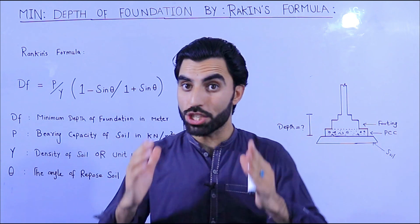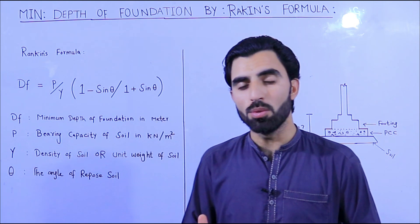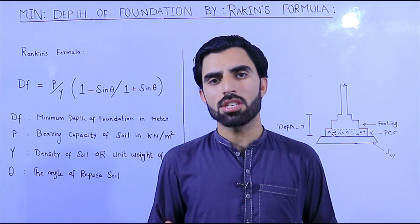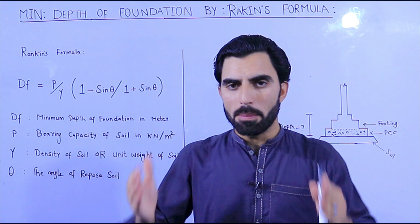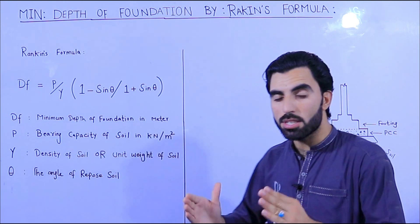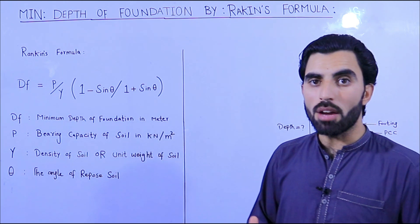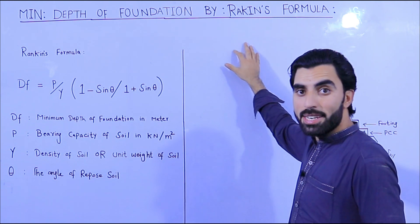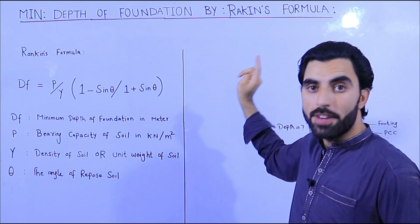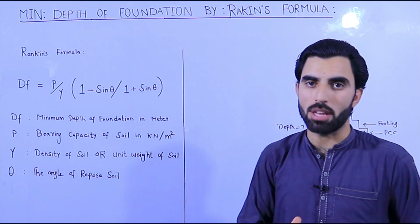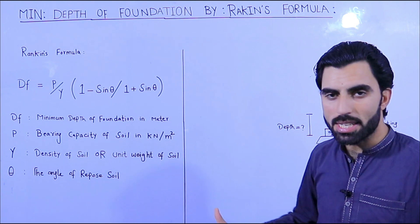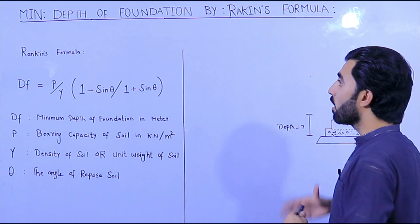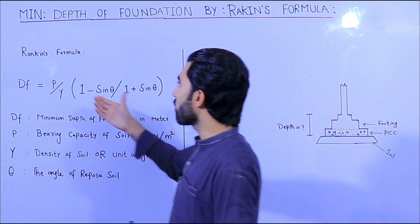So how to decide what should be the minimum depth of foundation? Today I will clear your concept. If I tell you to keep one meter, 1.5 meter, or 2 meter, that is called a thumb rule or blind method. But today in this video I will discuss the minimum depth of foundation with the help of Rankine's formula. This formula is very important to find the minimum depth of foundation. So let's start — if this video is helpful for you, don't forget to like it. First of all, what is Rankine's formula?